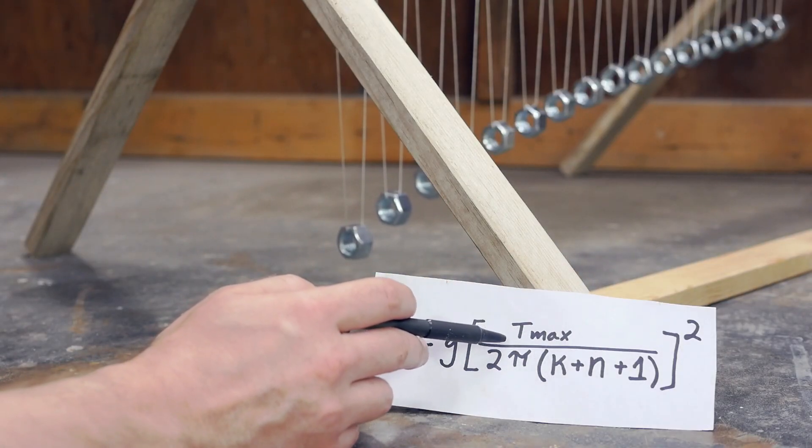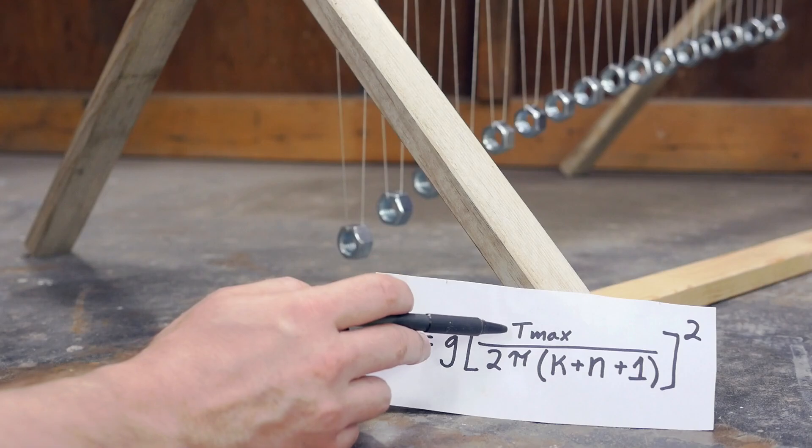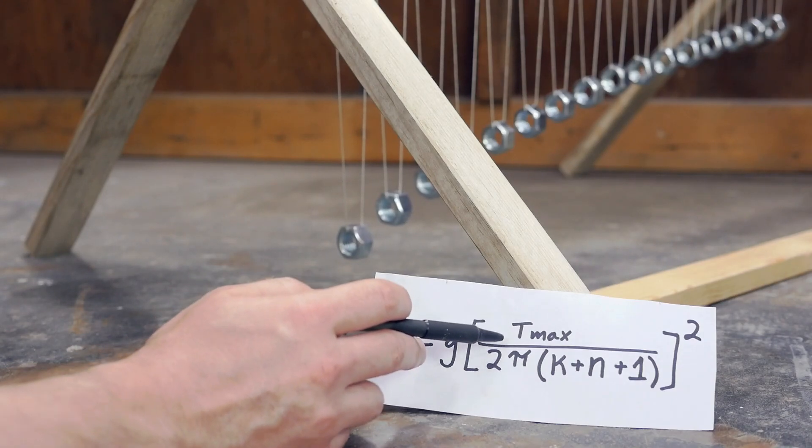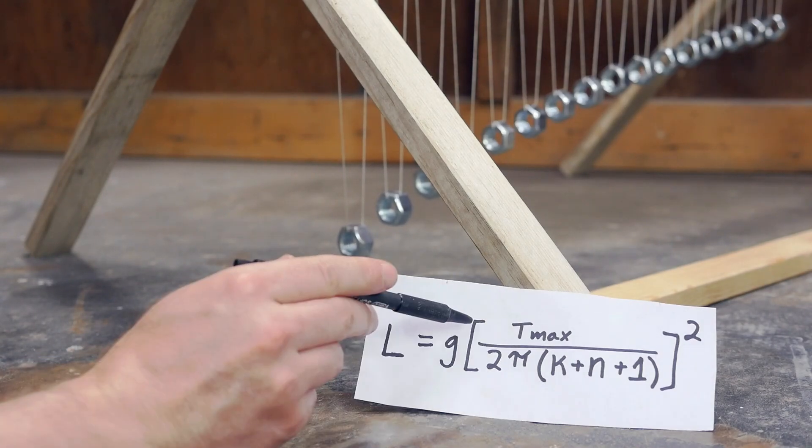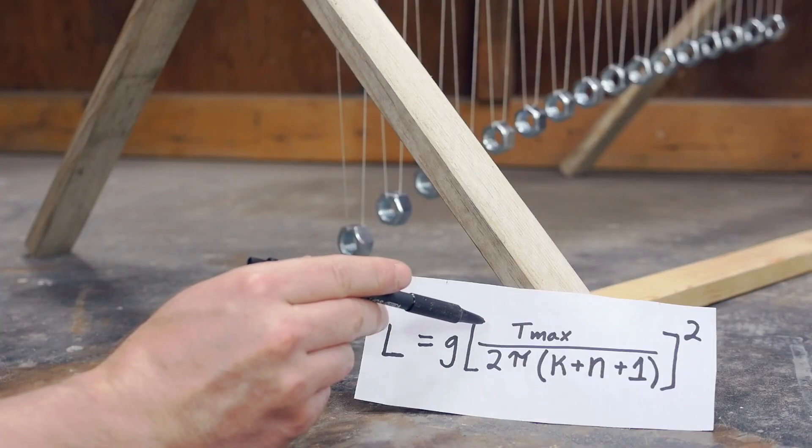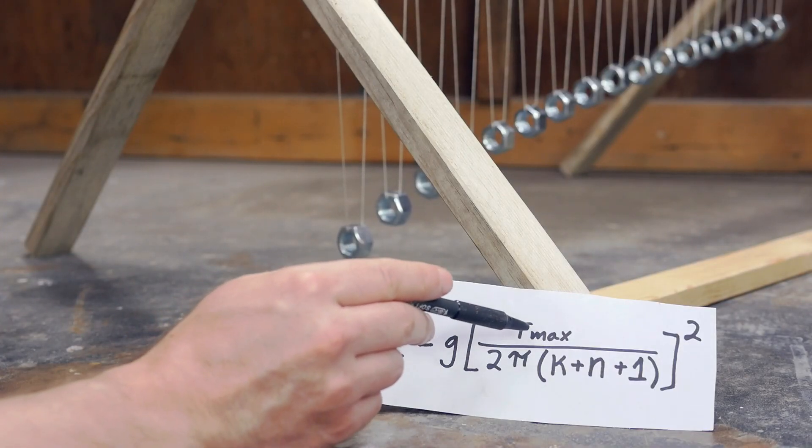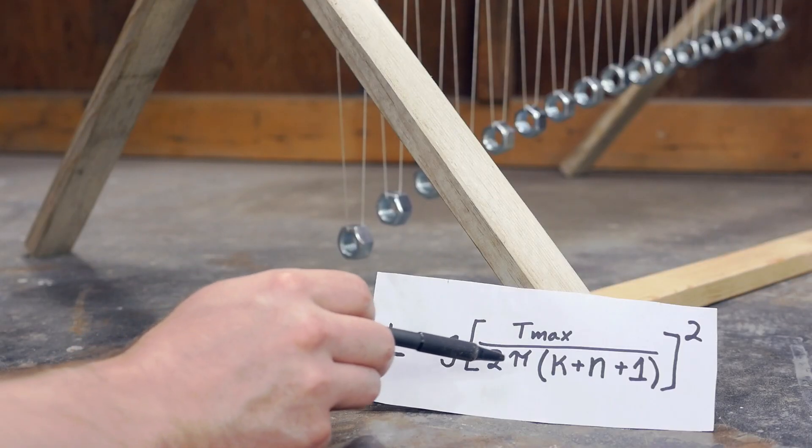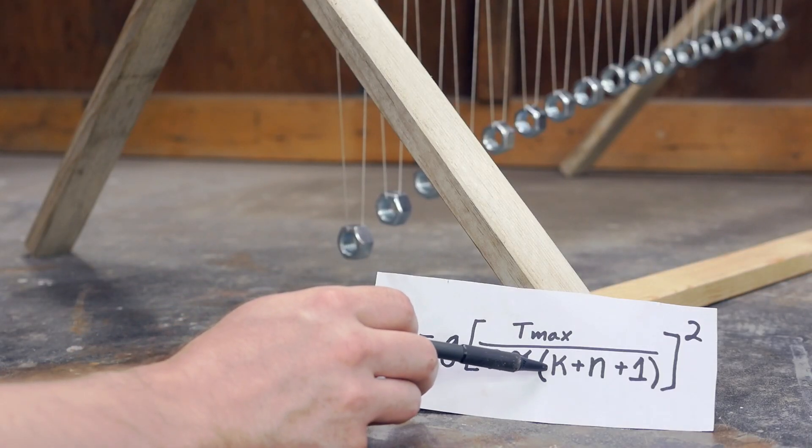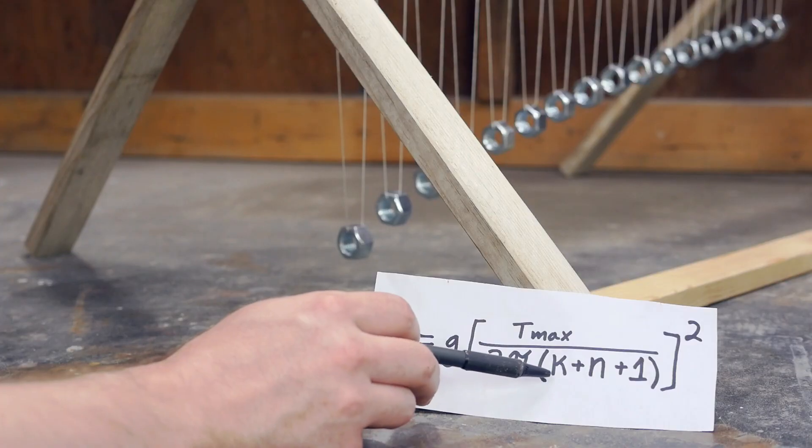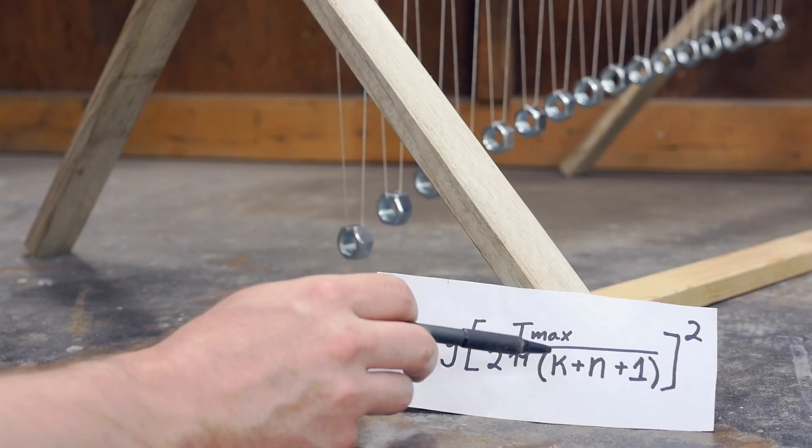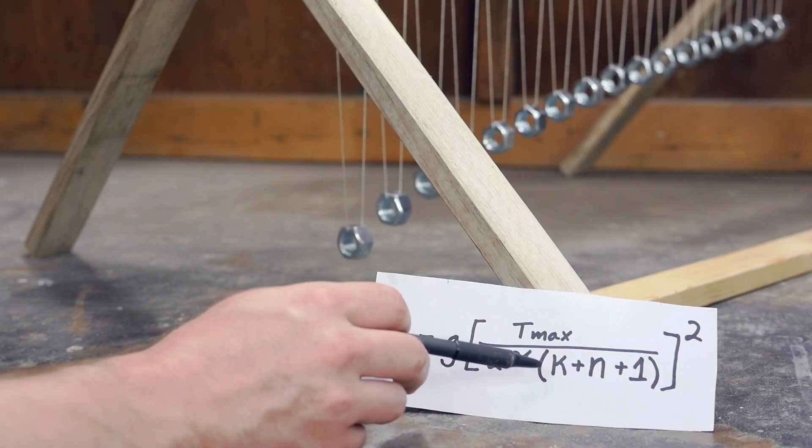What T max stands for is the amount of time in seconds that we would like the pendulum to take before we start to see repeating patterns. So if we'd like our pendulum wave to last for, say, 90 seconds, we would insert 90 in place of T max. The last variable is K, and we actually don't know what this number is. We have to solve for this number based on the length of the very first pendulum in the series.